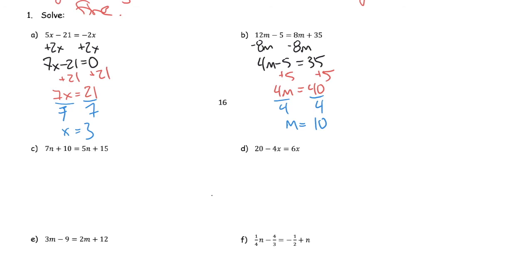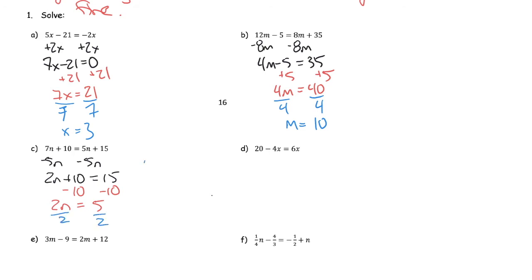For this next one, I want to get the n's together, moving everything over to the left-hand side. So 7n minus 5n is 2n, plus 10 equals 15. Subtracting 10 from both sides gives 2n equals 5. Dividing both sides by 2 gives n equals 5 halves.